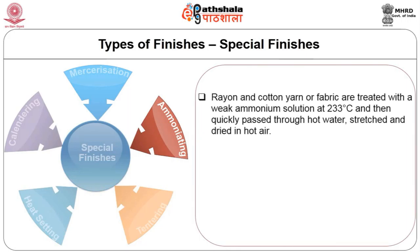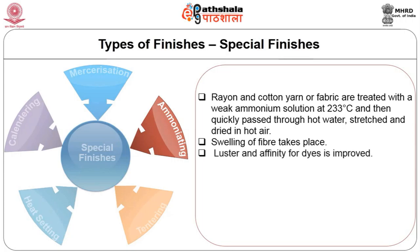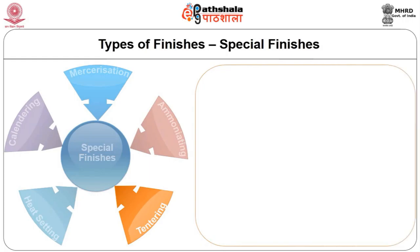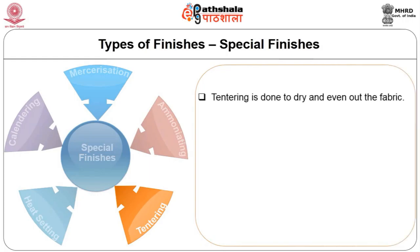Ammoniating: rayon and cotton yarn or fabric are treated with a weak ammonium solution at 233°C, then quickly passed through hot water, stretched and dried in hot air. Swelling of the fiber takes place, and lustre and affinity for dyes is improved.